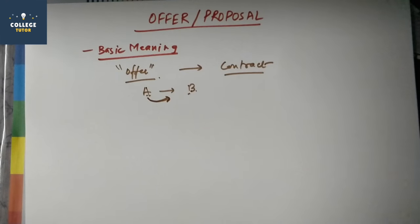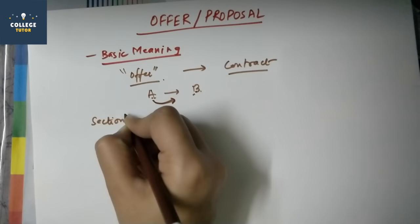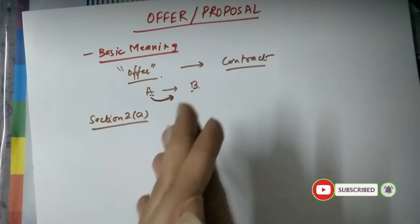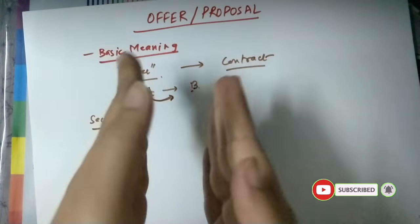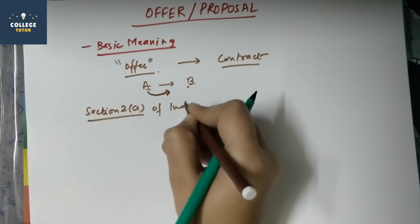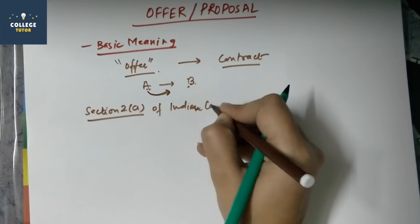In Indian Contract Act 1872, this proposal and offer is defined under Section 2A. So this word proposal and offer are defined under Section 2A of Indian Contract Act. Now proposal and offer are basically synonymous. We can interchangeably use both. If I say offer to you, it will also be the same as proposal. So it is defined under Section 2A of Indian Contract Act.